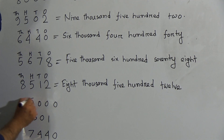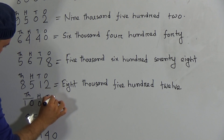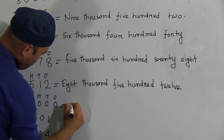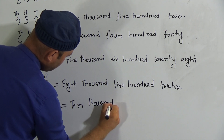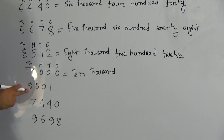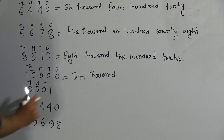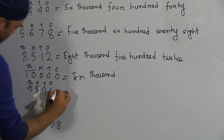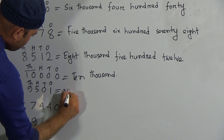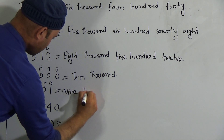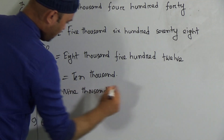The next number is 10,000. One is in the ten-thousand place, zero is in the hundred place, zero is in the tens place, and zero is in the ones place — so it is called ten thousand. After that, 9,501: nine is in the thousand place, five is in the hundred place, zero is in the tens place, and one is in the ones place — so nine thousand five hundred one.